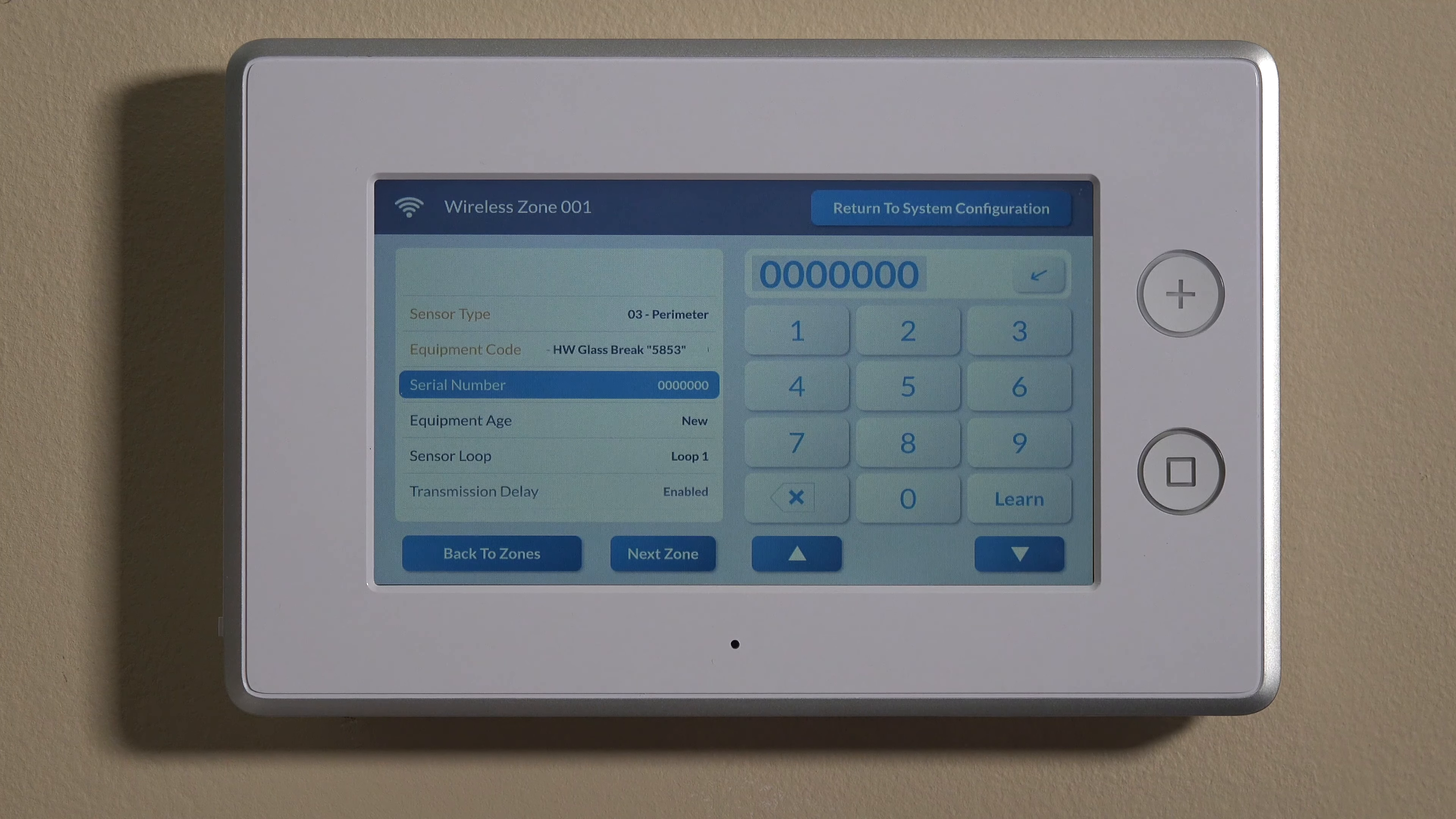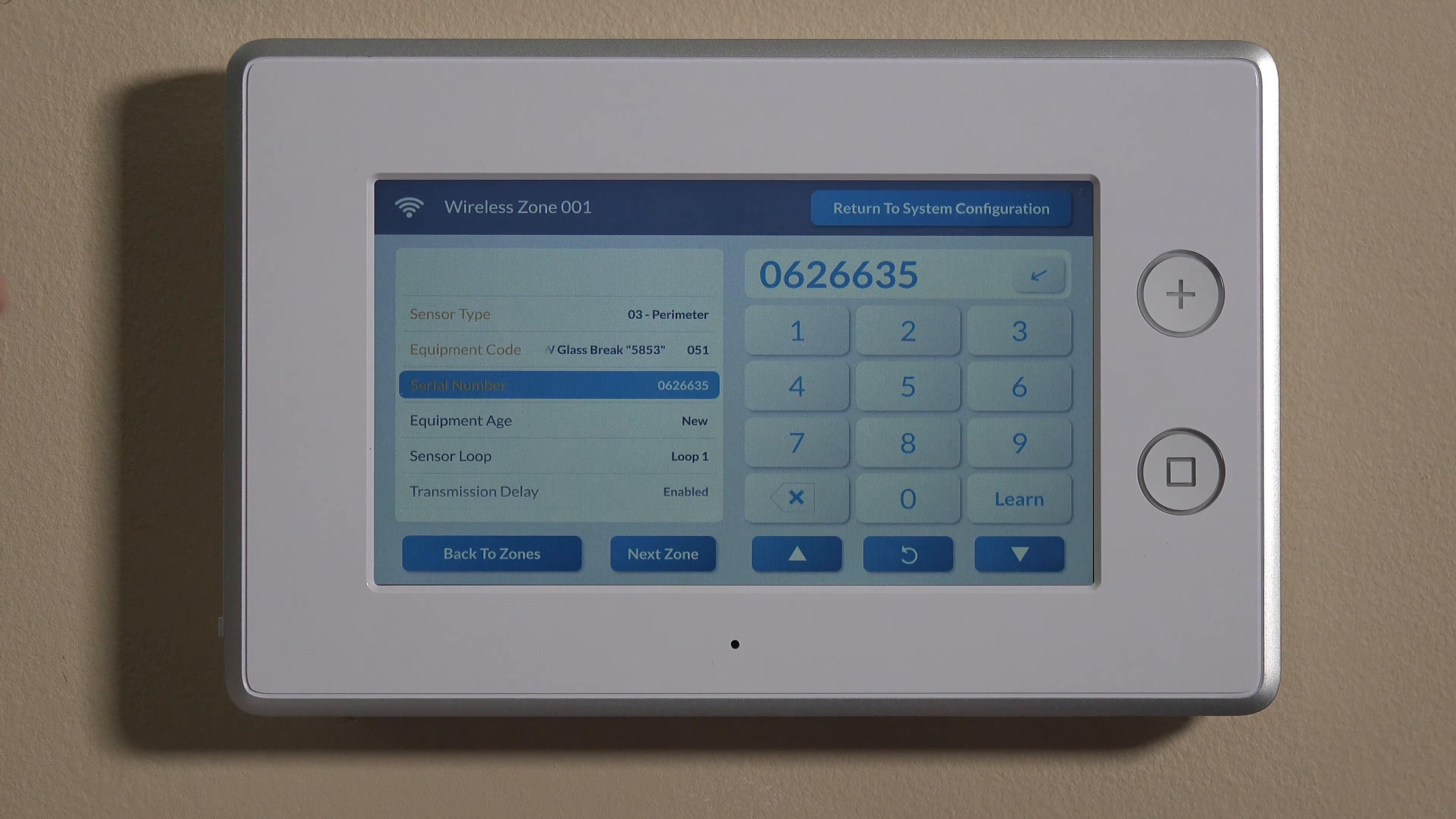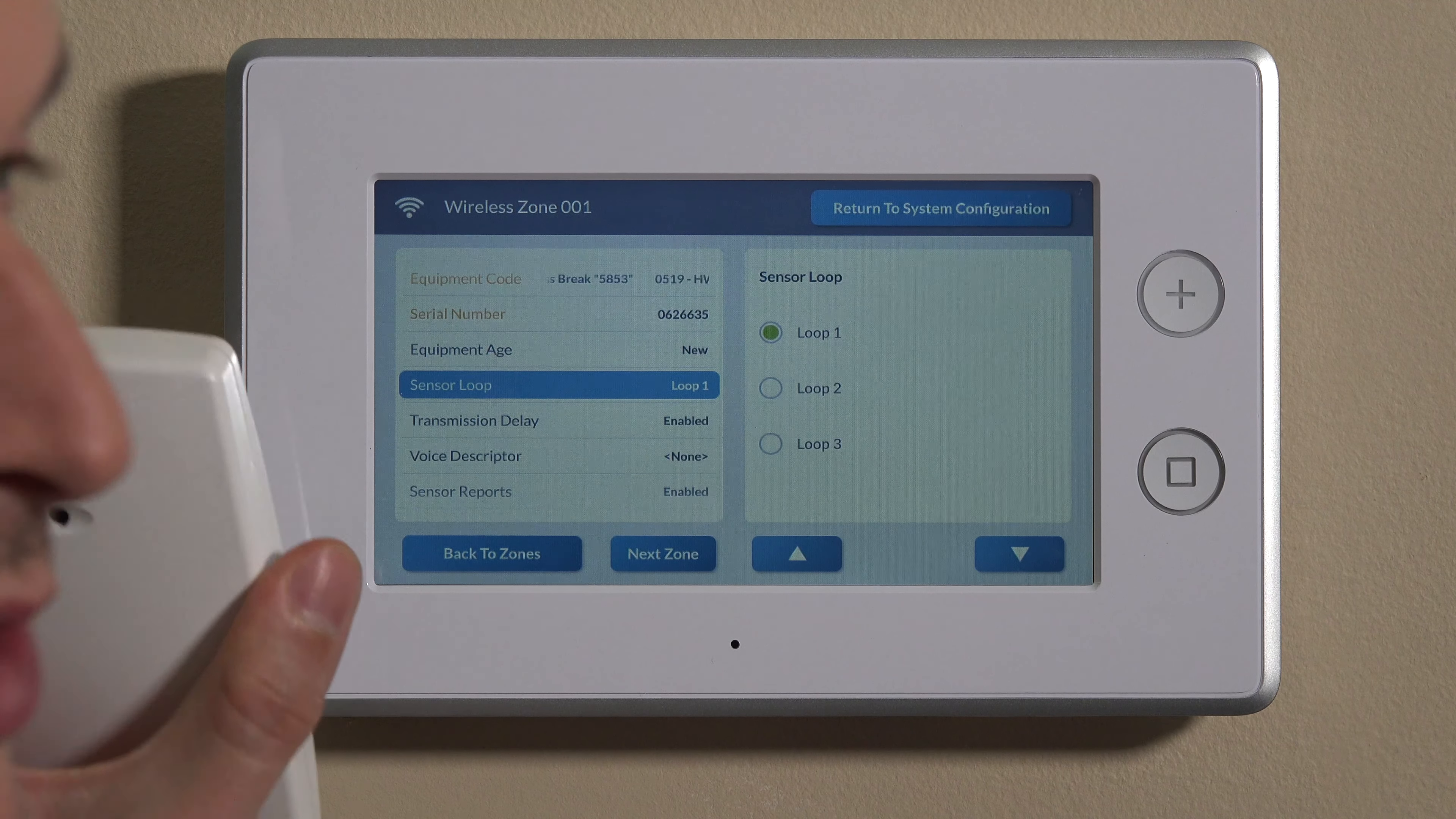We'll go down to Serial Number, and this is where we can manually enter that in. And so on the backside of the unit you have 0, 6, 2, 6, 6, 3, 5. If you've already installed this on the wall, again you could hit Learn and then it would look for it. It would listen. I actually have some motions in the room and that's why I'm not auto-enrolling right now. So we can manually enter it like I did, the 0, 6, 2, 6, 6, 3, 5. And then we can go ahead and bump to the next selection here. Before we move forward back to the Serial Number, if this is already wall-mounted, you can open this up and just verify the Serial Number on the inside. There's another sticker inside the tamper cover. So down here we want to keep it on loop 1. The 5853 is always loop 1.